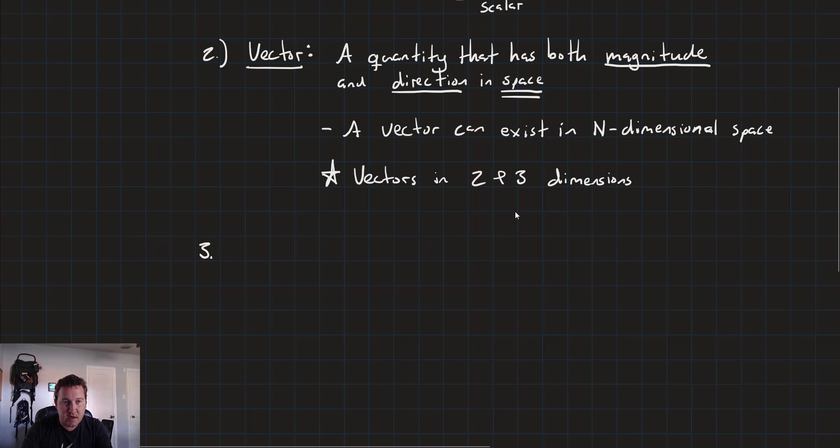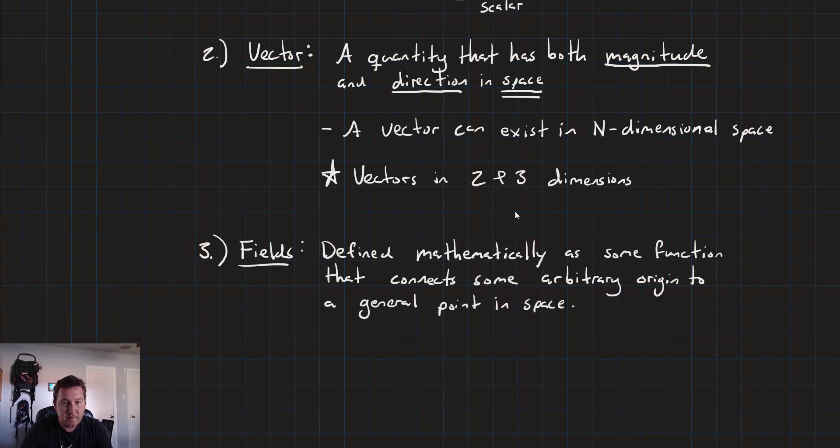Our next definition, so we've got scalars, vectors, and third, we will have fields. A field is defined mathematically as some function, that's the important bit, some function that connects some arbitrary origin to some general point in space. Now, we can have both scalar and vector fields.